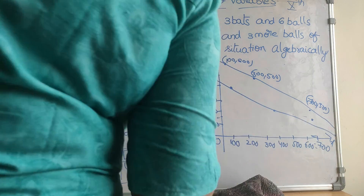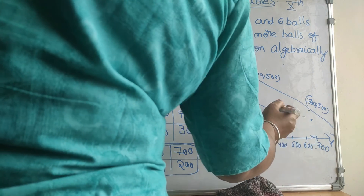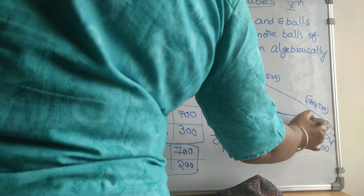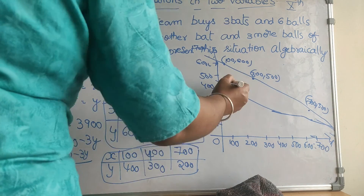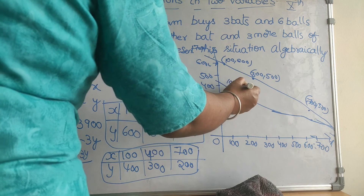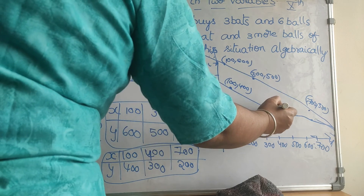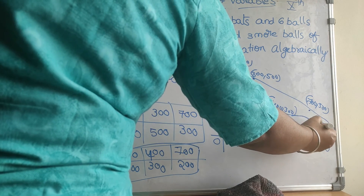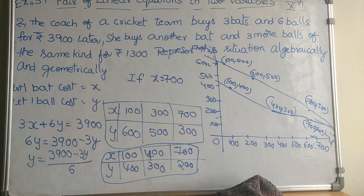The second line passes through coordinates (100, 400), (400, 300), and (700, 200). Both lines are now plotted on the graph, showing the geometric representation of the two equations.